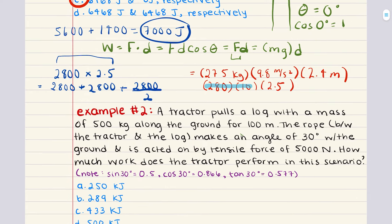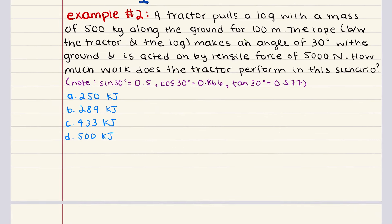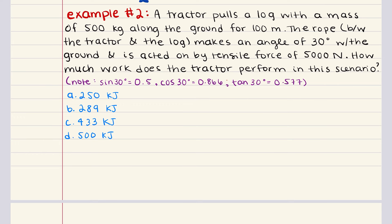Let's move on to problem number two. Problem two says a tractor pulls a log with a mass of 500 kilograms along the ground for 100 meters. The rope between the tractor and the log makes an angle of 30 degrees with the ground and is acted on by a tensile force of 5,000 newtons. How much work does the tractor perform in this scenario? We're given the values for sine 30, cosine 30, and tangent 30 degrees.